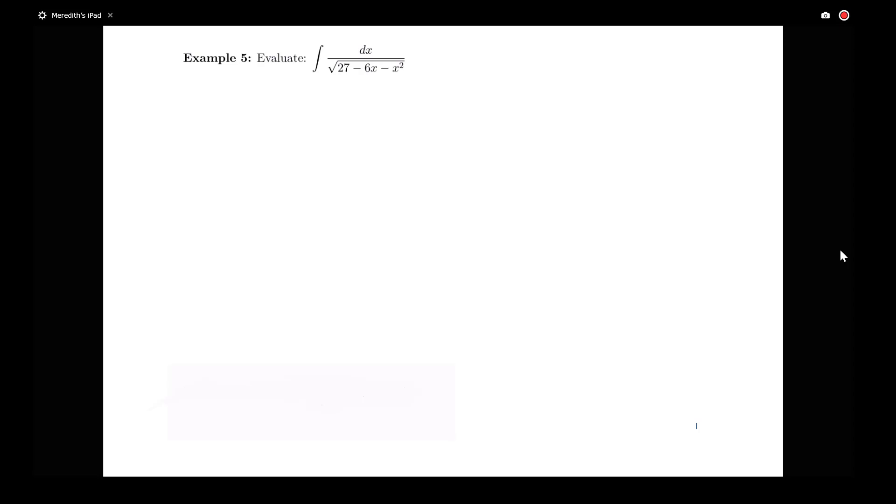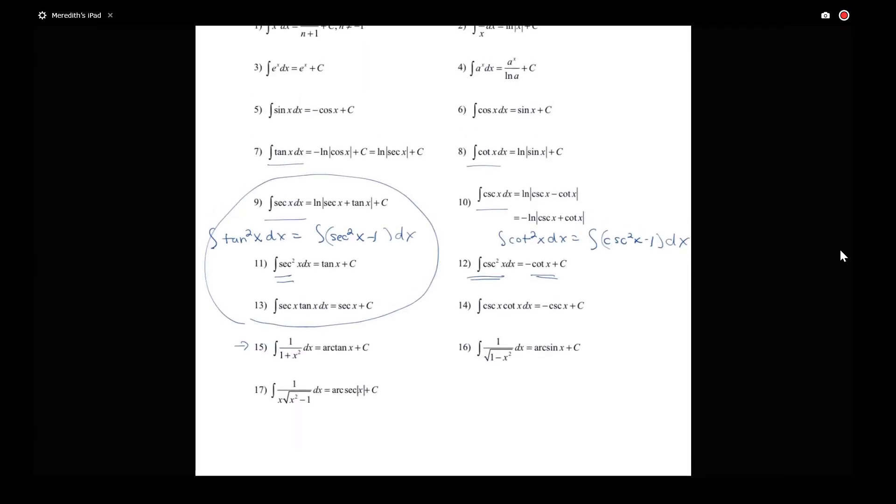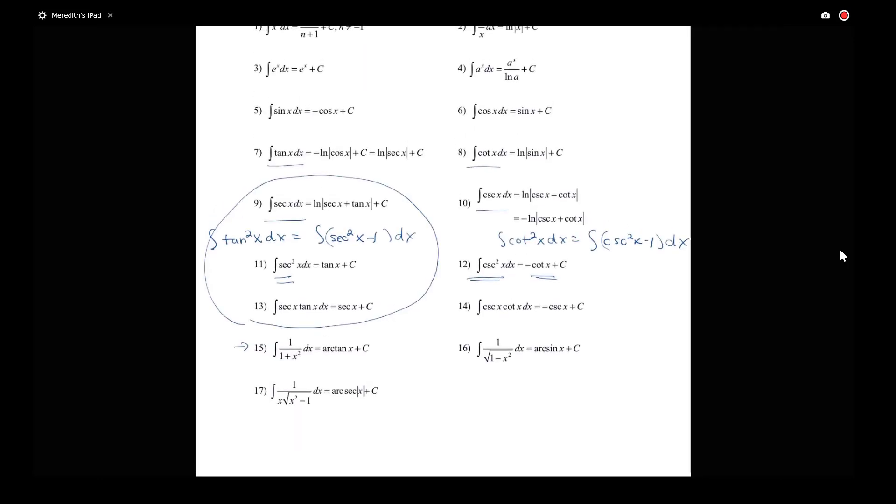One reason that completing the square is going to be useful is that we do know some integration forms where I have 1 over the square root of something squared minus something else squared. So let's just remind ourselves what that integration form is. I know, for example, here on 16 that the integral of 1 over the square root of 1 minus x squared dx is equal to arc sine. I also have something about the integral of 1 over x times the square root of x squared minus 1 being arc secant.